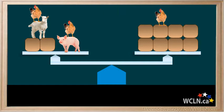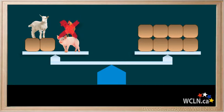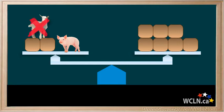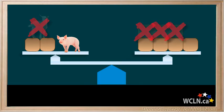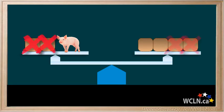First, we notice that we have a chicken on each side, so removing one chicken on each side is easy and keeps us balanced. Then we recall that each chicken is equal to one block, so if we remove the chicken on the left and one block on the right, we're still balanced. Next, we remove the goat — recalling the goat equals three blocks — so we remove the goat on the left and three blocks on the right. Finally, we remove the last two blocks on the left and two blocks on the right, and we're still balanced.